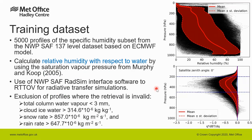For the training of the retrieval we start with 5000 profiles from the NWP-SAF 137-level dataset. We calculate the relative humidity with respect to water by using the saturation vapor pressure from the study of Murphy and Koop. For the radiative transfer simulations we use the NWP-SAF RADSIM and RTTOV softwares.